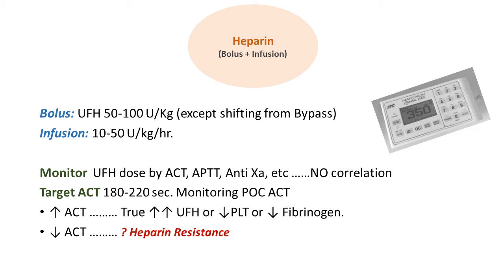We monitor heparin using ACT, aPTT, and anti-Xa, but it was found that there is no correlation between these factors. Most commonly, ACT is used because it is a bedside test — a small machine where you put a drop of blood and get a result in 2 to 3 minutes. We target an ACT of about 180 to 220 seconds using this point-of-care device.